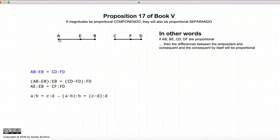then the difference between the two, AB minus EB, in other words AE, AE to EB would be equal to CF to FD.